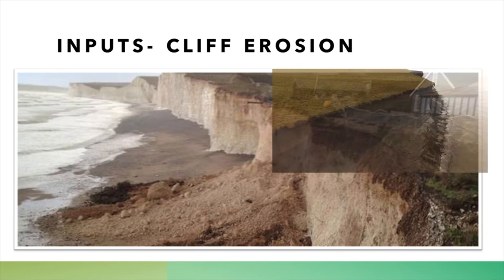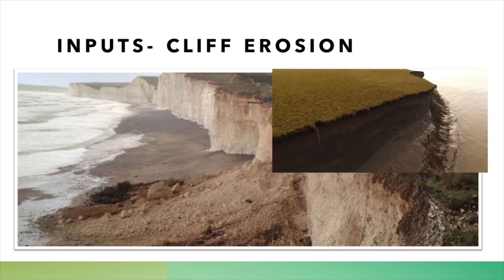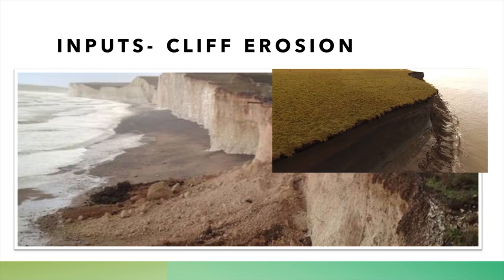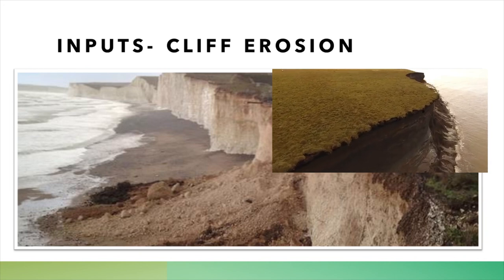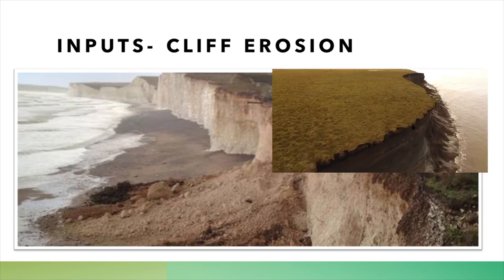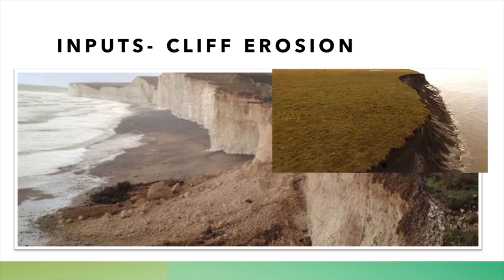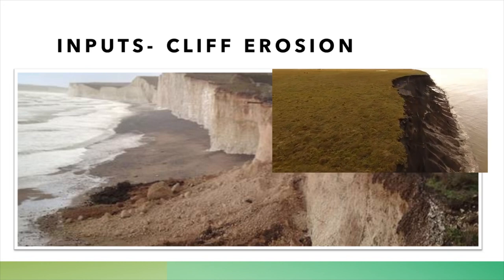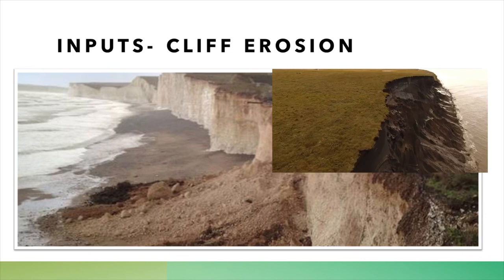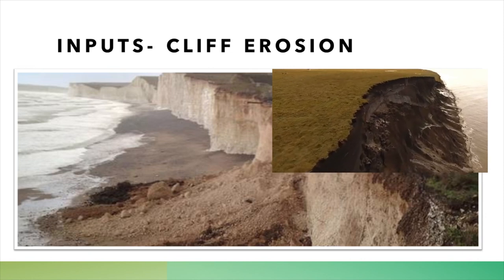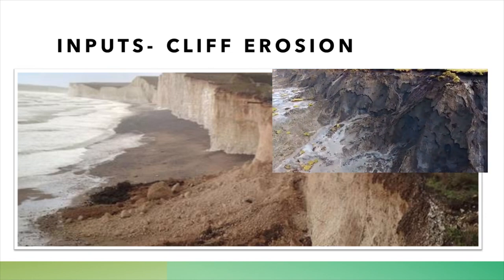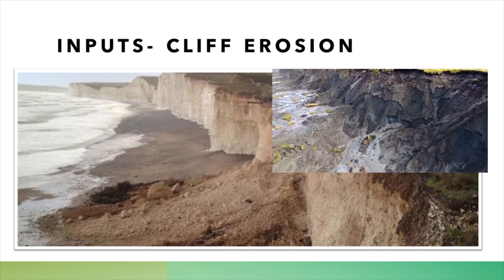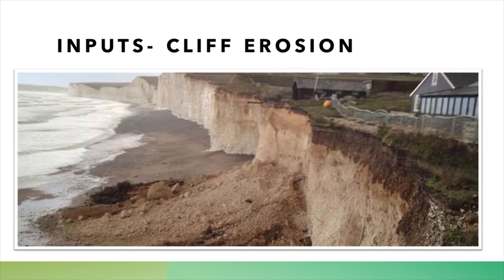One of the major inputs to a sediment cell is cliff erosion. This can be seen by wave action that comes into contact with the base of the cliff — it undercuts it, and eventually the cliff will collapse, as you can see in this photo, leaving behind a lot of sediment. The sediment then gets inputted into the system, taken away by waves, and moved to other parts of the sediment cell and coast.